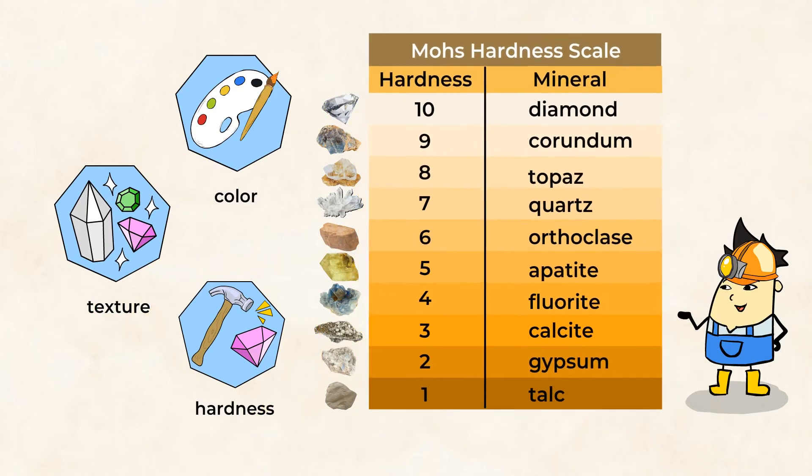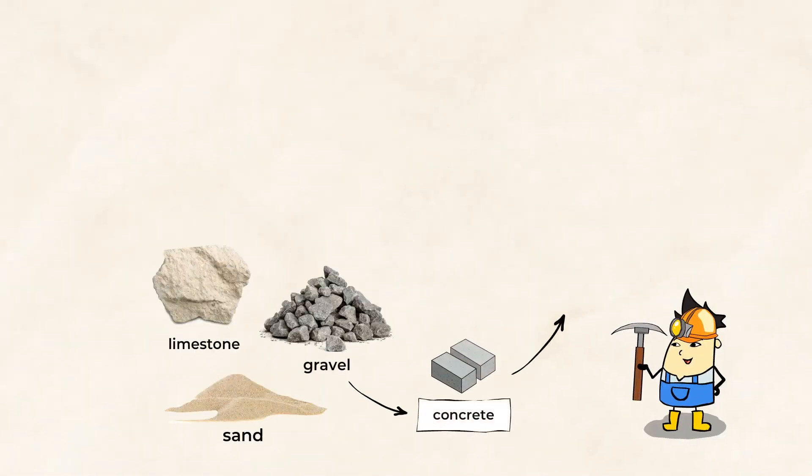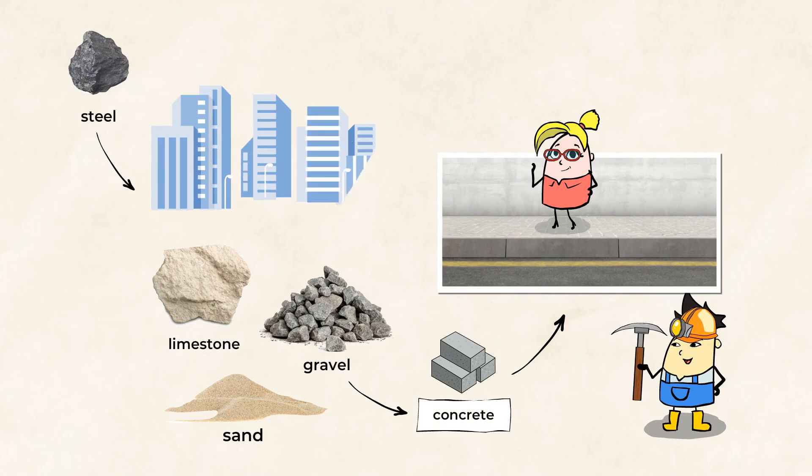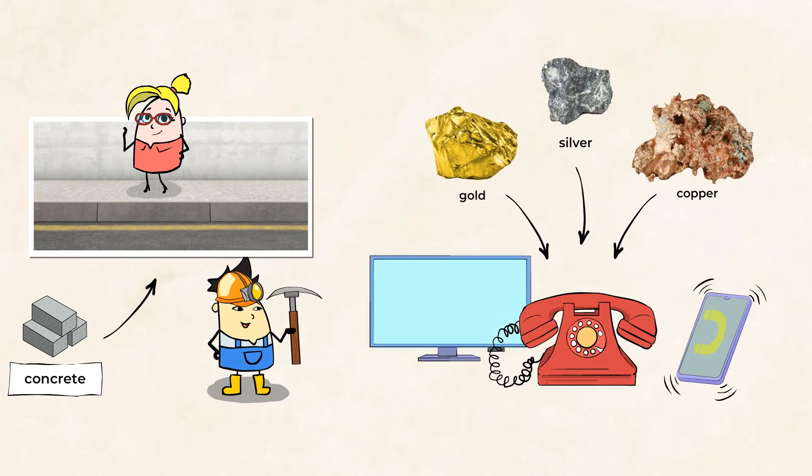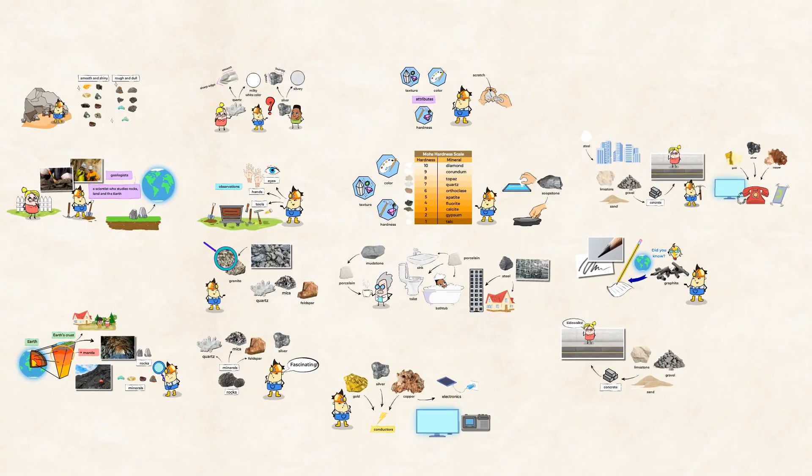We even have a scale to determine the hardness of different rocks. We can sometimes forget that rocks and minerals are actually all around us. The buildings that we're in right now are made of rocks and minerals. The phones we use and televisions we watch all use metals to work. Rocks and minerals sure are mighty useful. So next time you're outside, take a look and see what rocks are around you. And I'll see you in the next video.